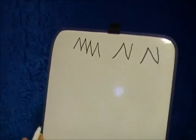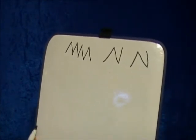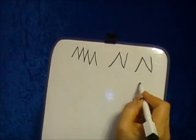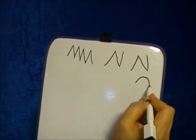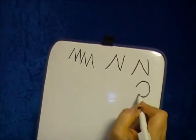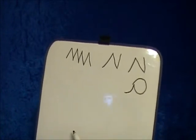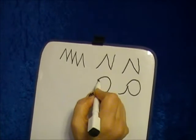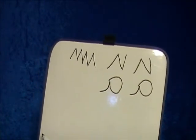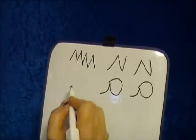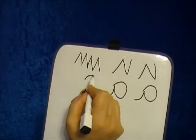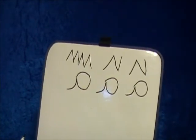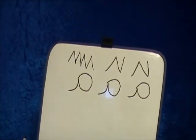The final mem is the mem sofit, and it's made like a backwards A. You start a little bit over on the left side, come around to the right, and put a tail on it. This is the mem sofit, which always appears at the end of the word, except for one place in Isaiah where it appears in the middle of the word — that will be a mystery to discover for yourself.